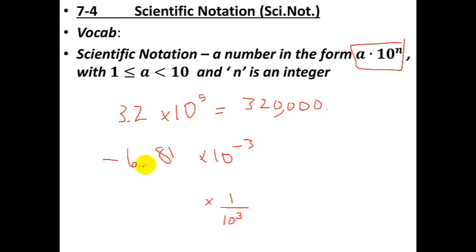And every time you divide by 10 you move the decimal place to the left. So 1, 2, 3. So we have to add a 0 here, we have to add a 0 here and then put a decimal. So this is going to be .00681.